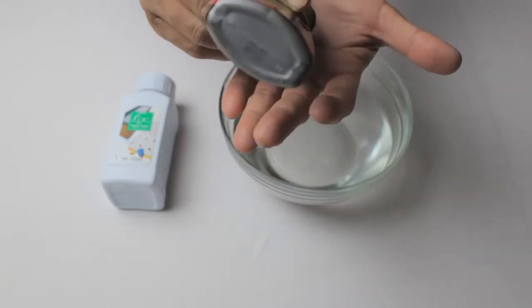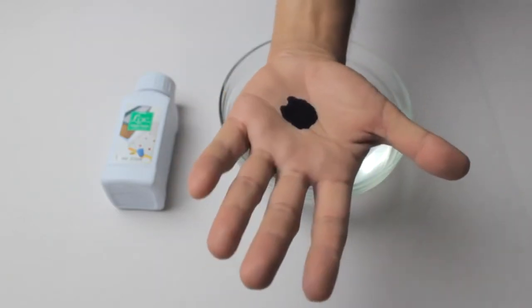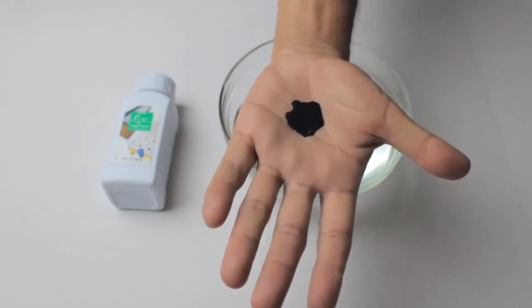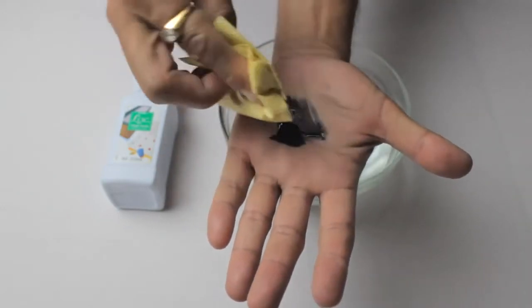I'm going to take some liquid shoe polish on my hand. This normally leaves tough stains which are even difficult to remove with soaps. So let's see how LOC scores on this.